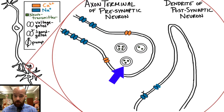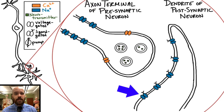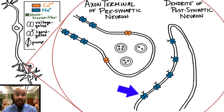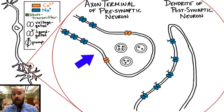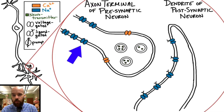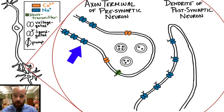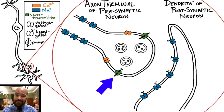On the dendrite of the postsynaptic neuron, we have ligand-gated sodium channels. That term ligand-gated just means that it needs a chemical messenger — in this case a neurotransmitter — to bind with it to cause it to open. Think of it like a gate and a key: you need a key in order to open that channel. Contrast that with the voltage-gated channels on the presynaptic neuron, which open when the membrane reaches a certain voltage, such as during the transmission of an action potential. Finally, we have another protein on the presynaptic neuron called the reuptake pump, which is going to recycle our neurotransmitters at the end of this whole process.